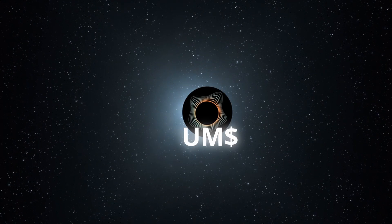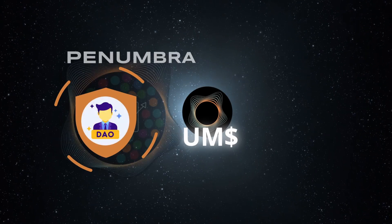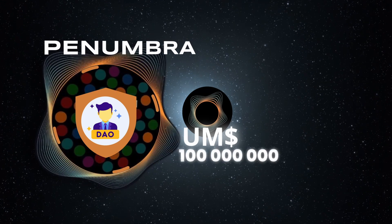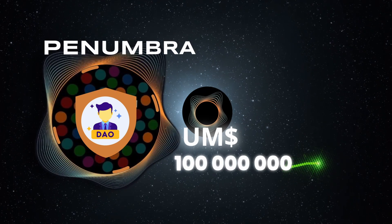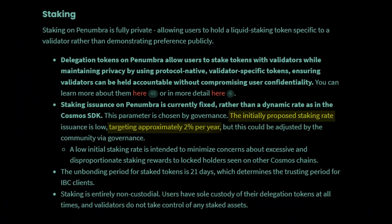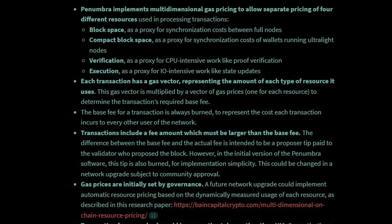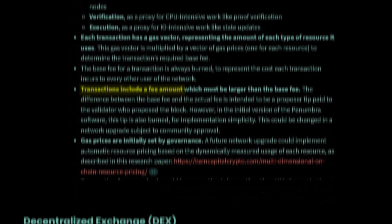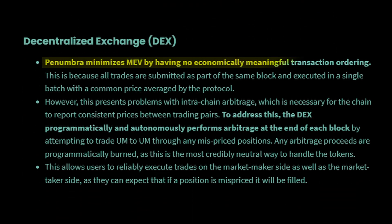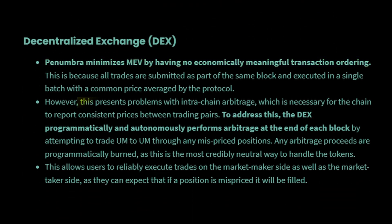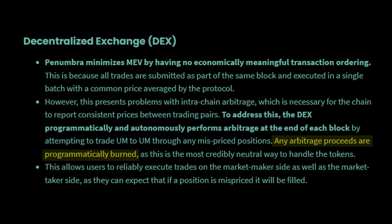The token is used to secure and govern the Penumbra blockchain. Penumbra has 100 million tokens but also 2% inflation per year to incentivize staking. Stakers are compensated with transaction fees on the shielded multi-asset blockchain. Penumbra minimizes MEV through its particular ordering of swaps and encryption of transactions, though there are opportunities for asset arbitrage in different liquidity pools — allowing the protocol to burn UM through arbitrage MEV.